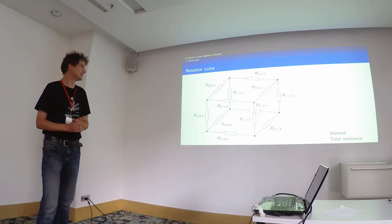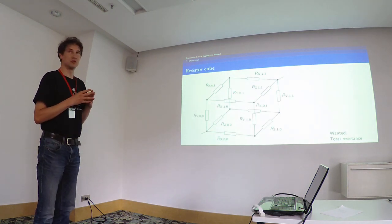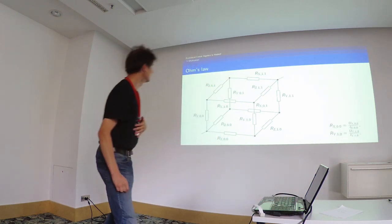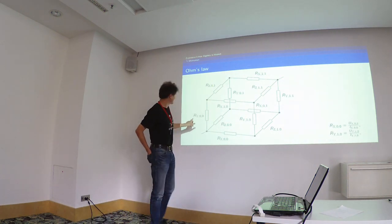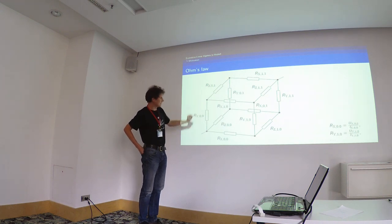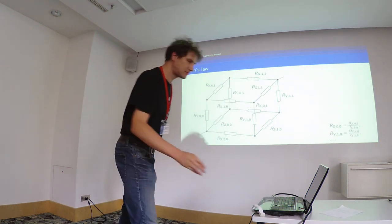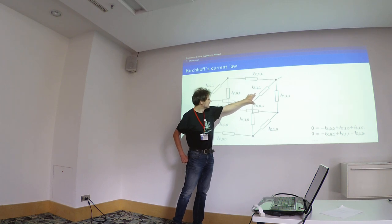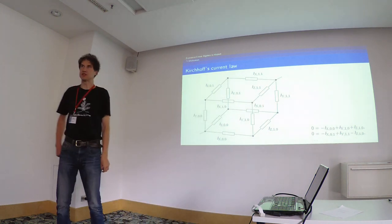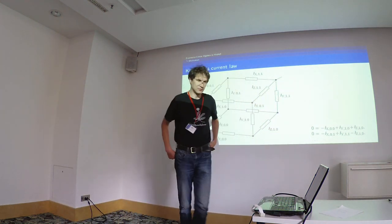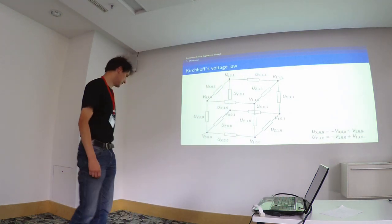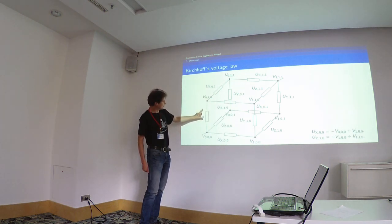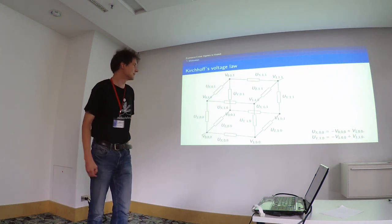This is the example I want to show you. To compute the total resistance of this network, we have to apply three laws. First is Ohm's law — resistance is the ratio of voltage and the current that flows through the resistor. Second is Kirchhoff's node law or current law: every current that flows into a node must go out again, such that the sum of the signed currents at each node is zero. Third, voltages are essentially differences of potentials — every node has a potential, and the voltage is always the difference between two potentials.